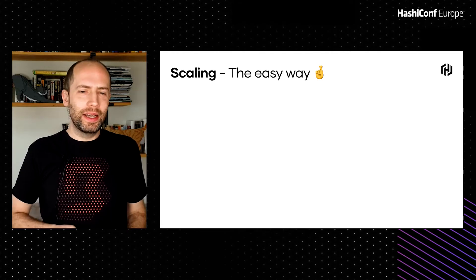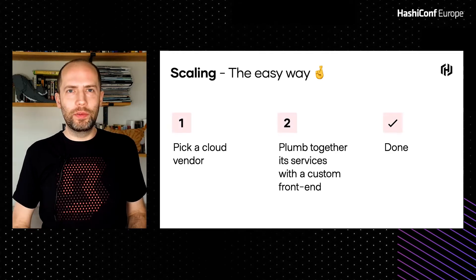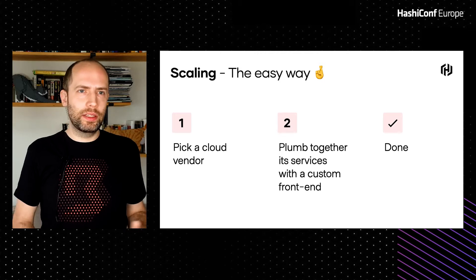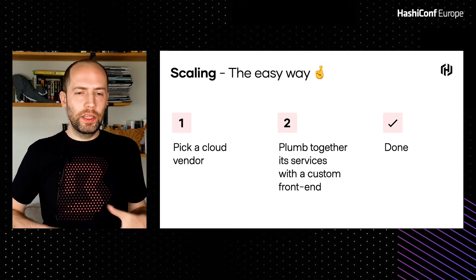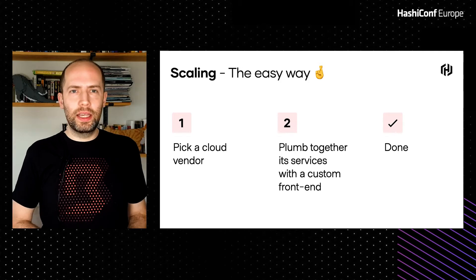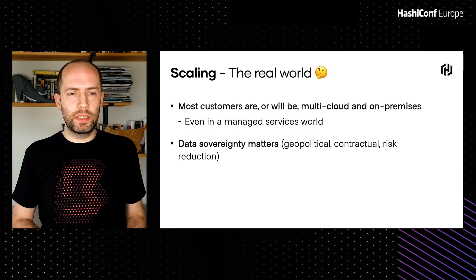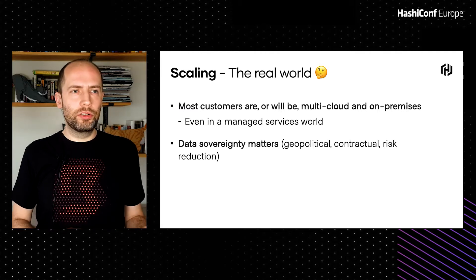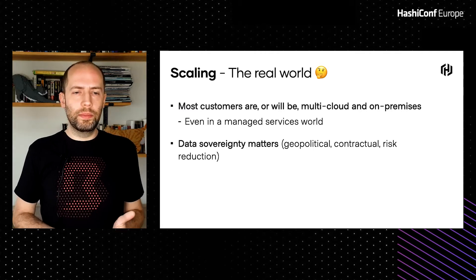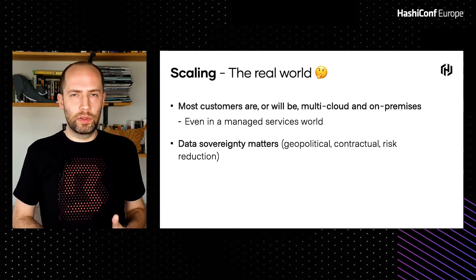Scaling the easy way — the modern approach — is you pick a cloud vendor with lots of services exposed, plumb together the services with a custom front end, and you're done. This works really well for a lot of products. But you have to hope pricing doesn't change and services aren't discontinued. It can help smaller projects get off the ground, but when you look at the scale of HashiCorp's customers and open source users, there are real-world complexities.